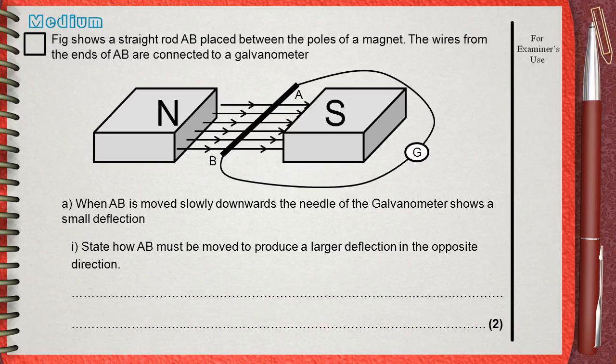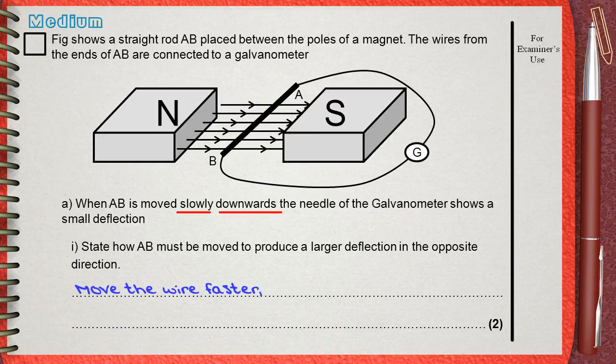In this question, the rod AB is moved downwards slowly and we need to produce a larger deflection of the galvanometer pointer in the opposite direction. Simply, we must move the wire faster to get a larger deflection.